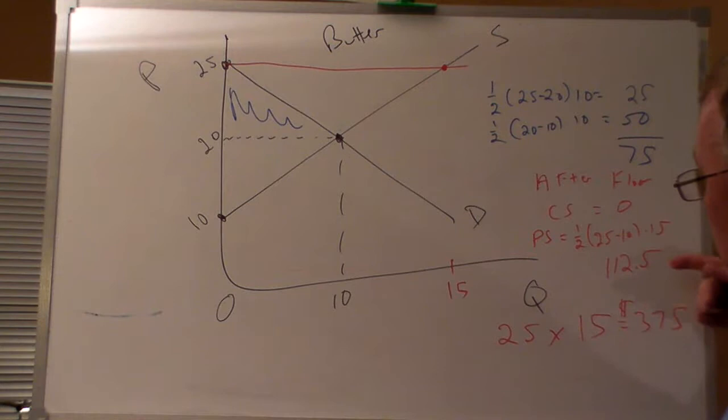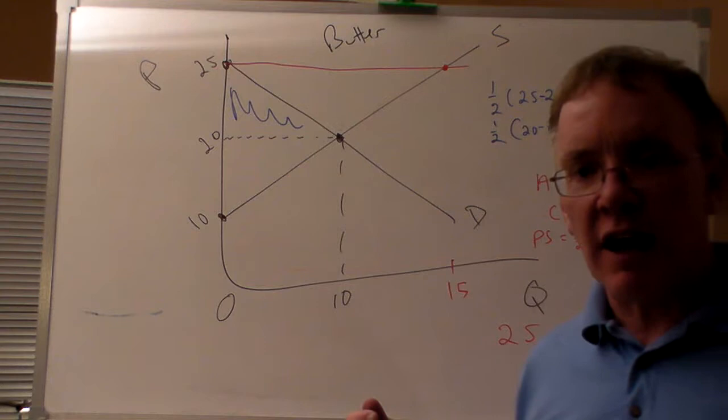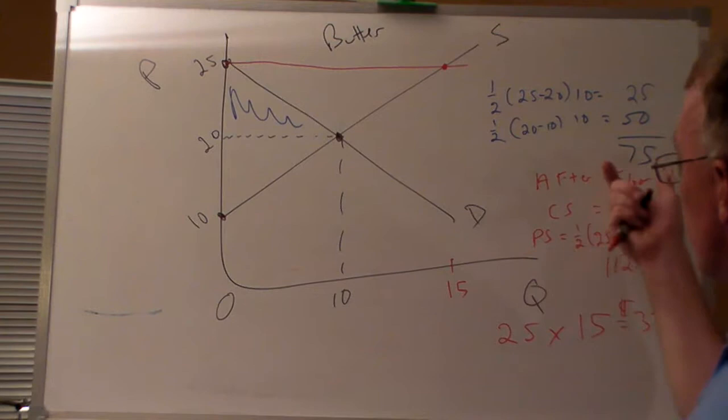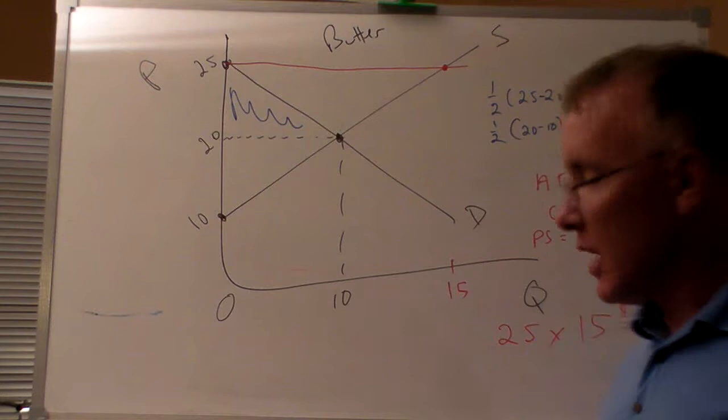Remember, it's not that they're paying $375 so producers can get 112.5 — they're paying $375 so producers can get the difference between 112.5 and 75. Because without this payment, the producer surplus would have been 50. So for $62.50 of additional producer surplus, it's costing the government $375 — probably not the most efficient use of society's resources.